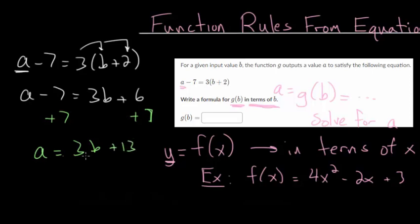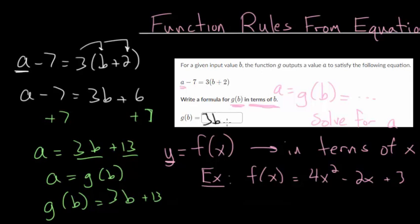Since we solved it for a and we put the b terms and the constant on one side of the equation, this a is equal to g(b). In other words, we can conclude that g(b), since it's equal to a, is equal to 3b + 13, which is exactly what we'd put in this box here.